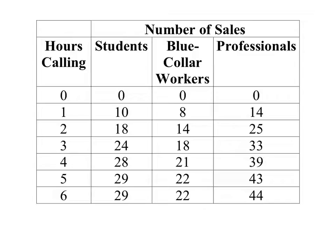The previous problem we applied the equimarginal principle to a consumer decision-making problem — the consumer had two goods, Pepsi and Snickers, and we had to decide how many of each good the consumer would purchase given the budget constraint. This is a very similar problem, except in this case we're not dealing with a financial budget constraint but rather a time constraint.